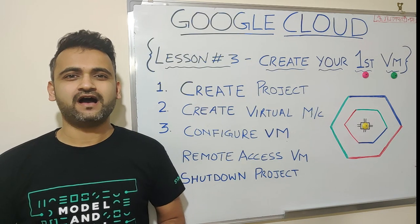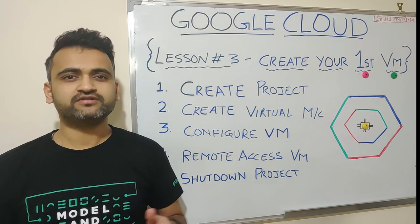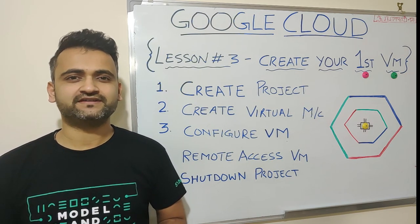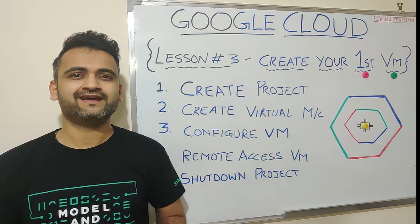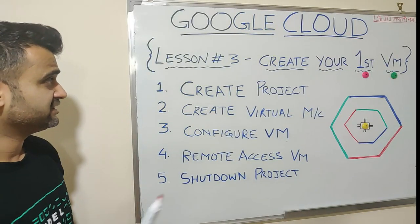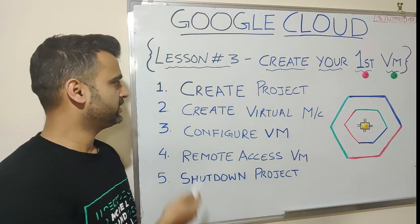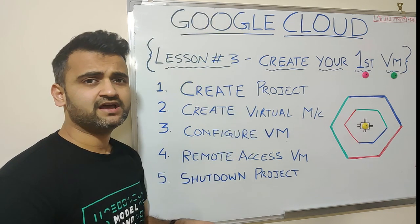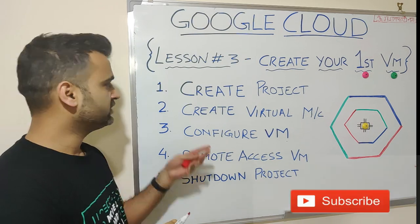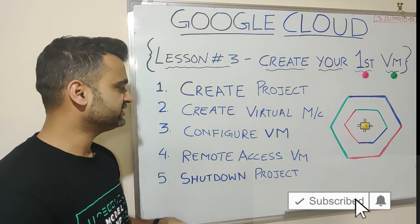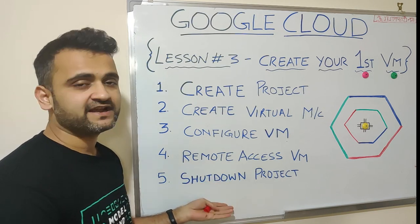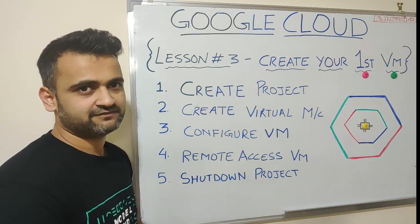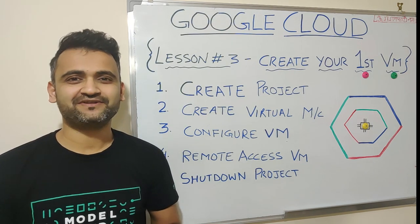Hello friends! After covering GCP basics in the first two lessons, now is the time to get some hands-on practice. In this particular lesson we'll create our very first virtual machine — a Windows machine on Google Cloud Platform — and we'll do it in five simple steps. First, we'll create a GCP project. Second, we'll create a virtual machine and install Windows Server 2012. Third, we'll configure it. Fourth, we'll test it by remotely accessing it from our laptop. Finally, we'll shut down the project to clean up.